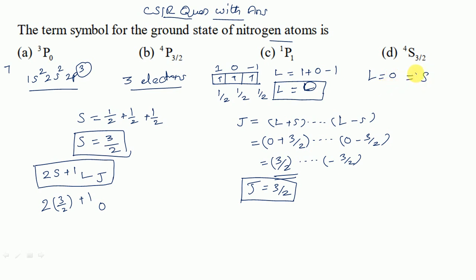0 means S. L equals 1 means P. L equals 2 means D. L equals 3 means capital F. So therefore here 0 means S. L equals 0 means S.